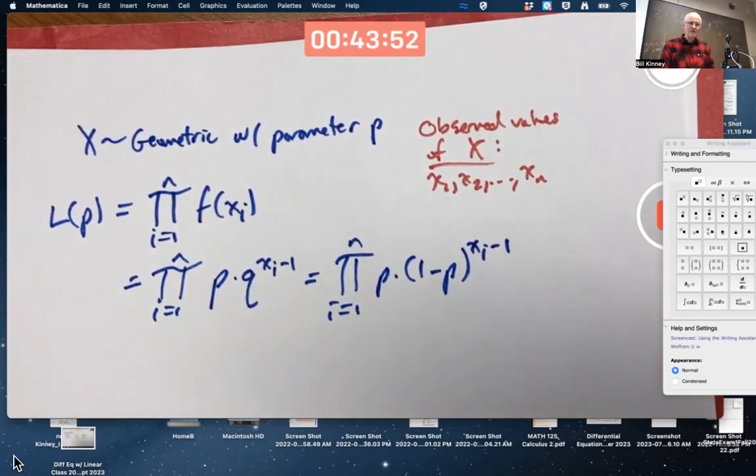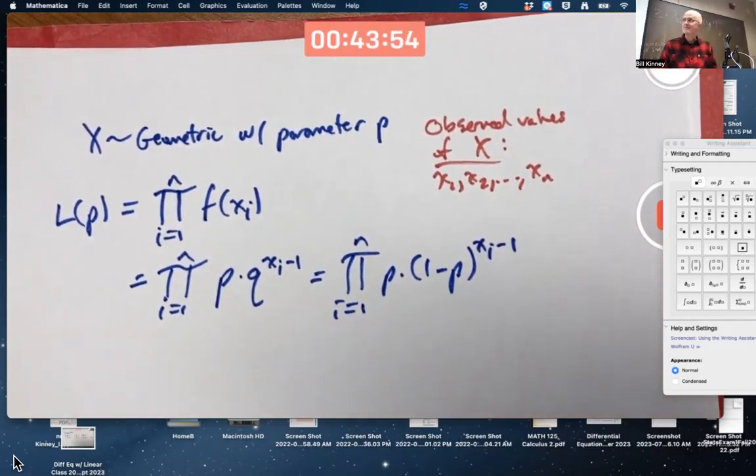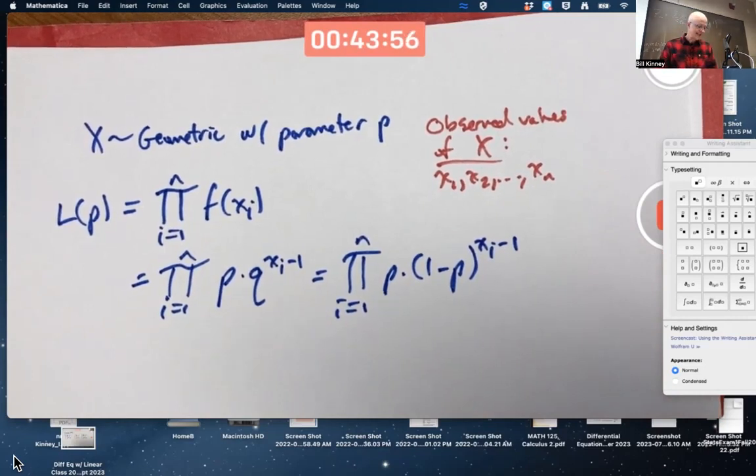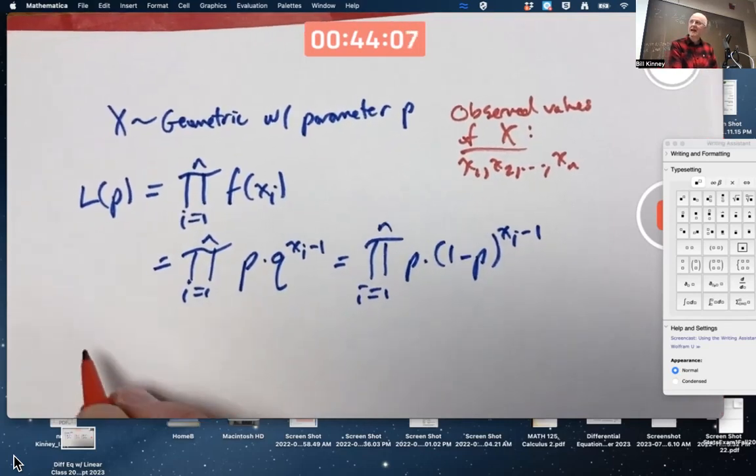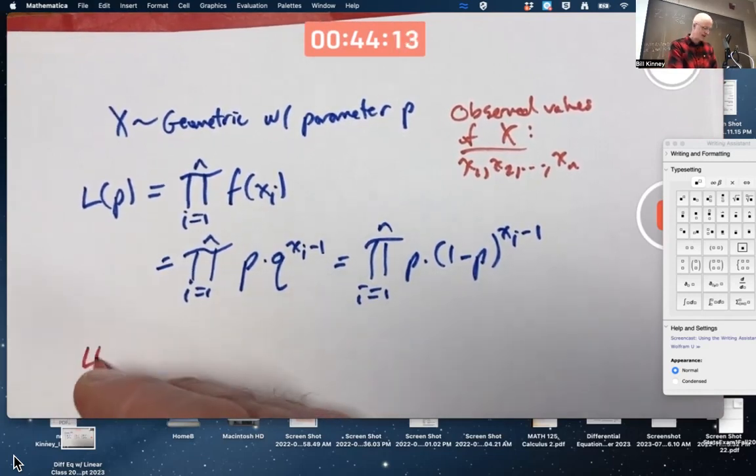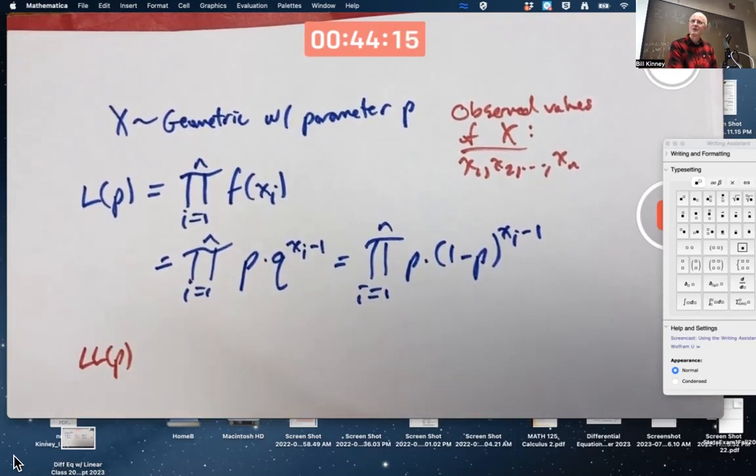And if I were going to try to maximize this as is, I need some sort of generalized version of the product rule, wouldn't I? Doesn't sound so nice. So it's almost always, as far as I know, best to take the natural log. The log likelihood function. Do you do this, Dave? I call it LL of P for log likelihood.